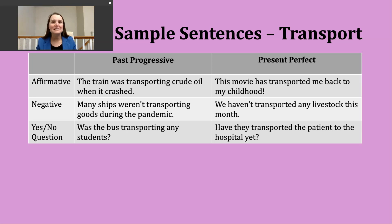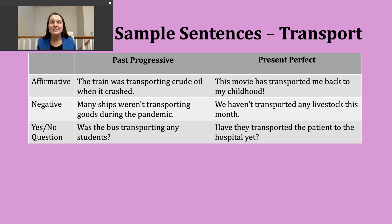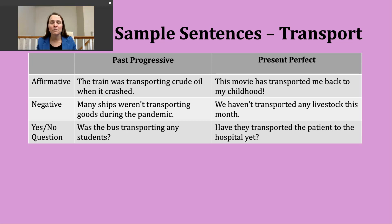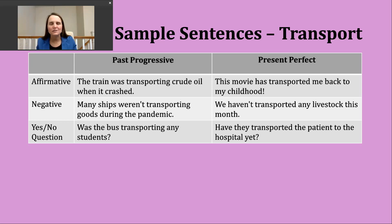Now let's look at the present perfect. We use this verb tense to describe an action that started in the past and continues into the present, or to talk about an action that occurred at some unknown point in the past. Like the past progressive, the present perfect has two parts. The subject is followed by 'have' or 'has' — 'have' for I, you, we, or they; 'has' for he, she, or it — and then the -ed form of the verb, since transport is a regular verb.